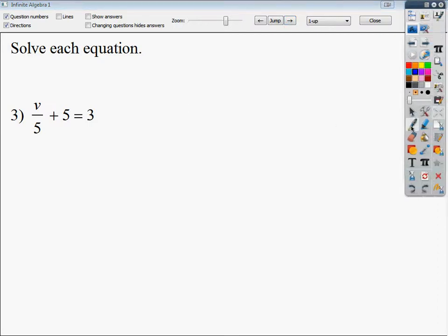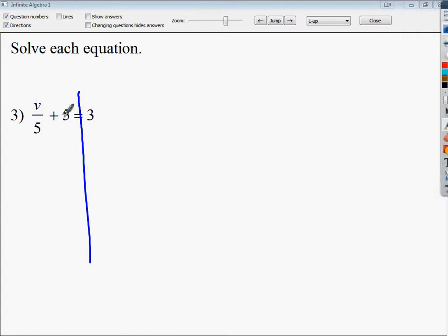Draw your line. Then I have my V here. The thing furthest from the V, of course, would be this plus 5 that's way over here. So I need to subtract 5.